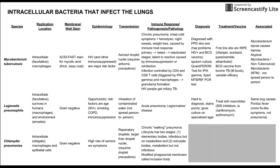Chlamydia pneumoniae causes walking pneumonia, which is a chronic condition but less severe. The life cycle of chlamydia has two stages: elementary bodies, which are infectious but do not carry out metabolism, and reticulate bodies, which have metabolism but are not infectious. It's easy to remember — infectious first, then metabolism. When chlamydia infects a human cell, it modifies the phagosomal membrane into what is called an inclusion body and survives in there.